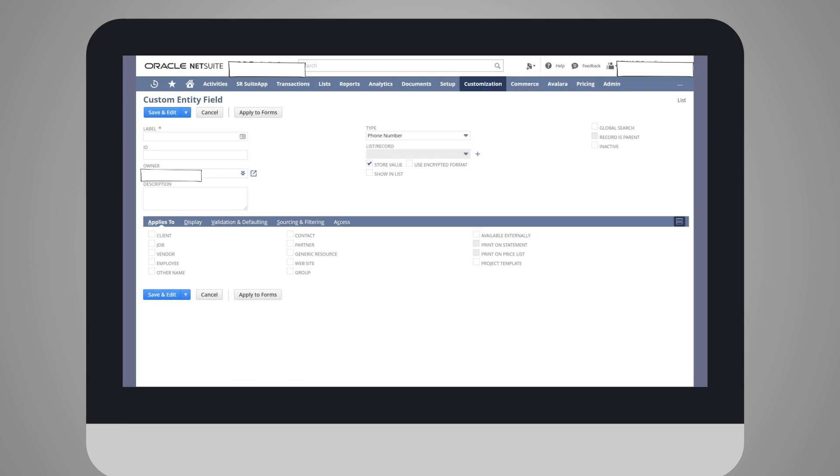At the top of the custom entity field page, you must label your new field. This name will be visible to users. After labeling your custom field, you can provide an optional ID, designate the owner of the field if you need it to be someone other than yourself, and write a brief description of the field.